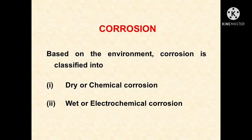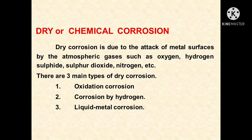Good morning. Today we are going to discuss the topic of corrosion. Based on involvement, corrosion is classified into two types: dry or chemical corrosion, and wet or electrochemical corrosion. Dry corrosion is due to the attack of metal surfaces by atmospheric gases such as oxygen, hydrogen sulfide, sulfur dioxide, nitrogen, etc.